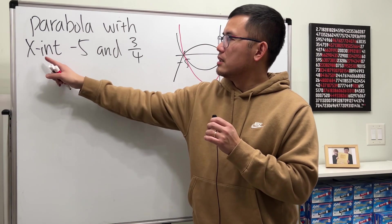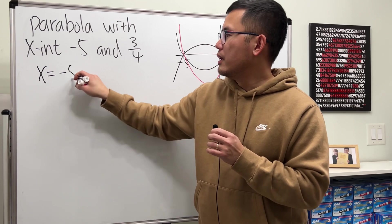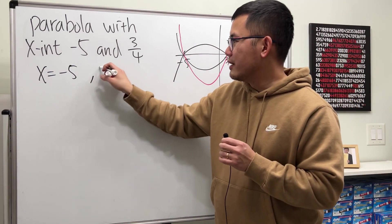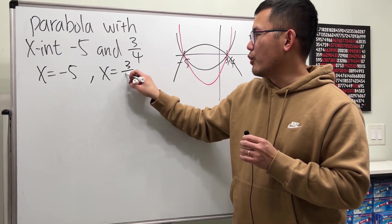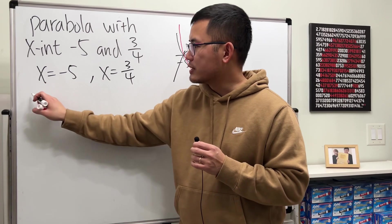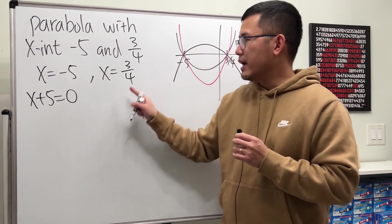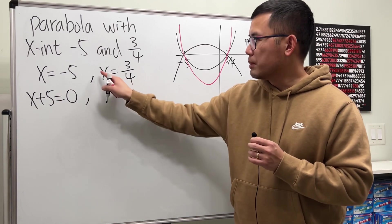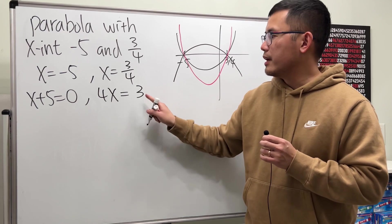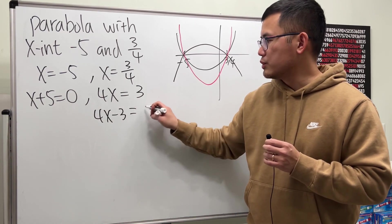Because, when x-intercept is negative 5, that means x is equal to negative 5, right, on the x-axis. Similarly, x equals 3 over 4. From here, if we add 5 on both sides, we get x plus 5, that's equal to 0. And then, right here, that's multiplied by 4 on both sides. So, 4x equals 3. And then, put the 3 to the other side. 4x minus 3 equals 0.